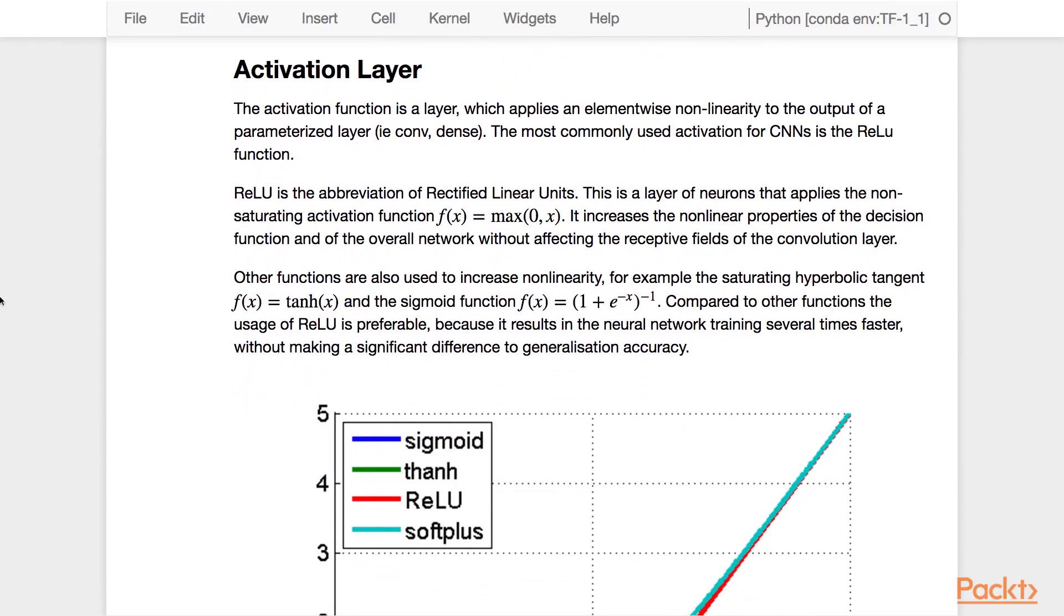Now let's look at the activation layer. The activation function is a layer which applies an element-wise non-linearity to the output of a parameterized layer, such as the convolutional layer or the dense layer. The most commonly used activation for CNN is the ReLU function.